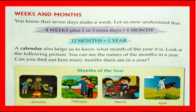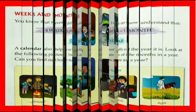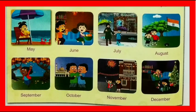The months of the year, as you can see in the picture, are: January, February, March, April, May, June, July, August, September, October, November, and December.